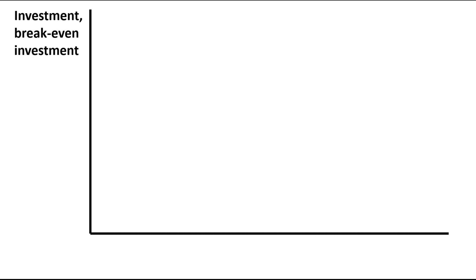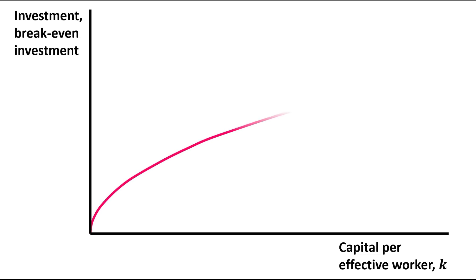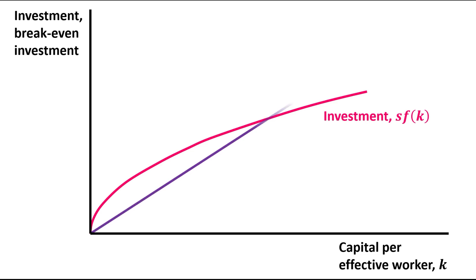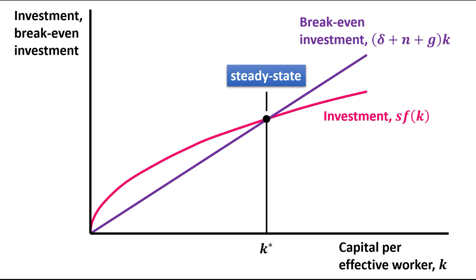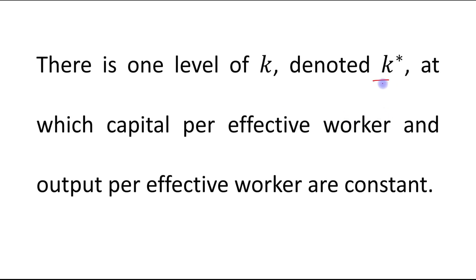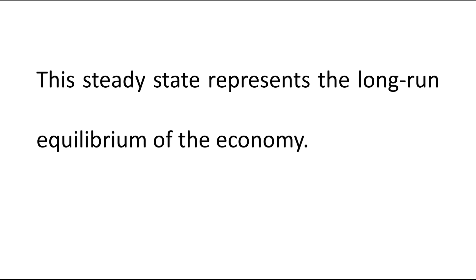On the vertical axis we have investment and break-even investment, and on the horizontal axis we have capital per effective worker. This is the investment curve, and this is the break-even investment line. The intersection point of these two curves is the steady state, denoted k star — the steady state level of capital per effective worker at which capital per effective worker and output per effective worker are constant. This steady state represents the long-run equilibrium of the economy.